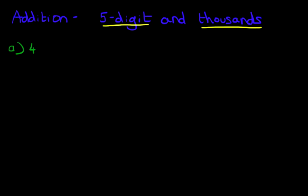What is 42,352 plus 6,000? Now this is actually quite an easy one. Large numbers, but it is quite easy. We're going to do this using the vertical format.